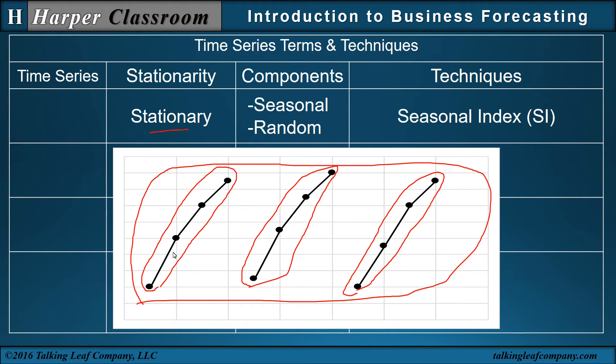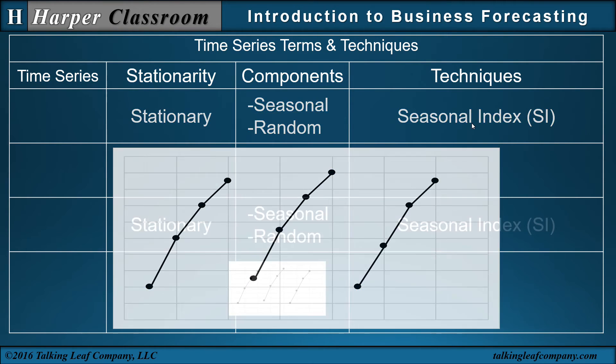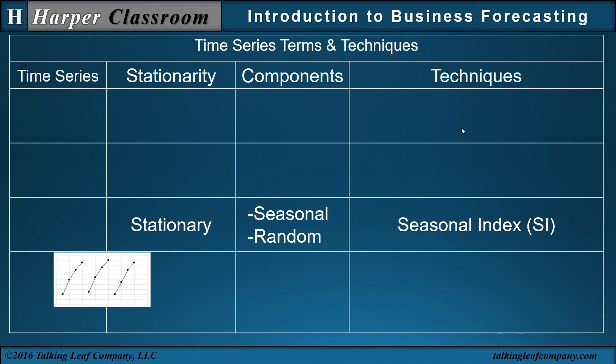But because we have a pattern that repeats every year, that's called a seasonal component. Well, the variability between the years, here and here, the variability between the years then would be a random component. And the technique of preference would be seasonal indexes. So that's the third time series.